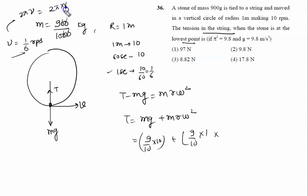So it is π by 3. So omega squared - omega is π by 3 - is π² by 9, so it is cancelled, it is 9.